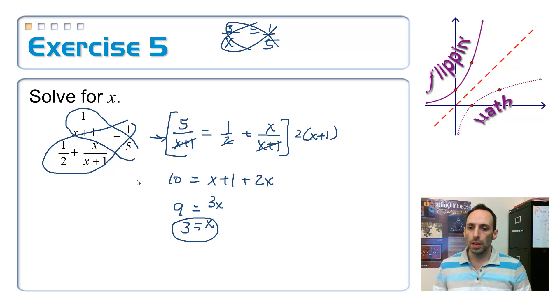Look at that. It wasn't too bad. Check to see. Is 3 going to make the denominator equal to 0 anywhere? Mm-mm. Sure isn't. So, that's got to be the answer.